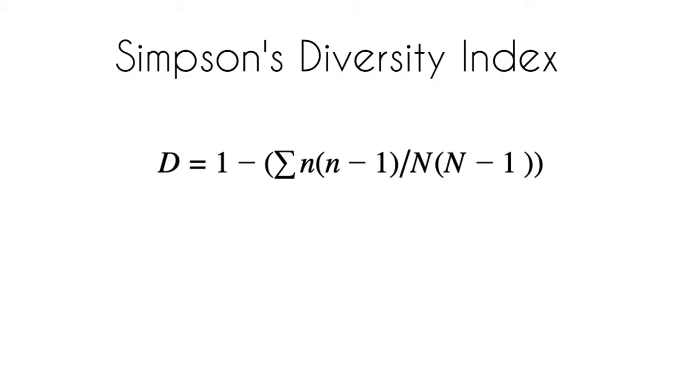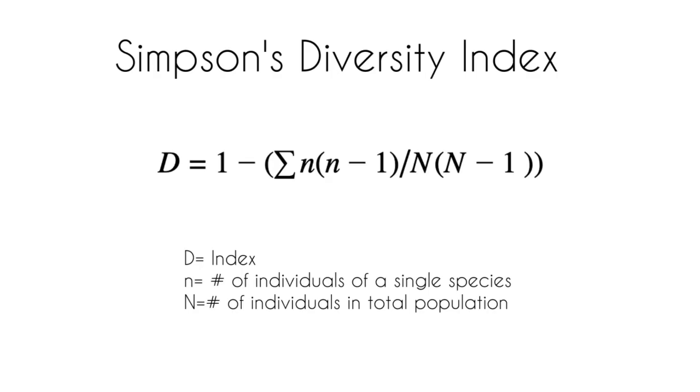The variables in this equation are d, which is the diversity index, lowercase n, which represents the number of individuals in a single species, and capital N, which represents the number of individuals in the entire population.